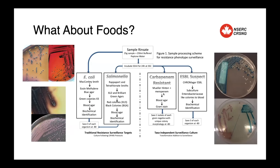We've also done some research into foods. Antimicrobial resistant surveillance is frequently done on domestically produced meat products here in Canada and many other countries, but we were really interested in looking at other types of foods — things that are imported and maybe aren't captured by current surveillance programs. So we looked for E. coli and Salmonella, which are really common targets of resistance surveillance.